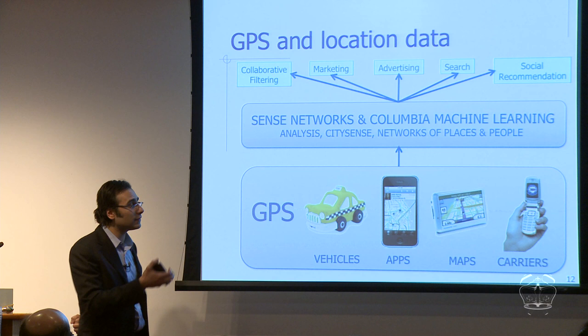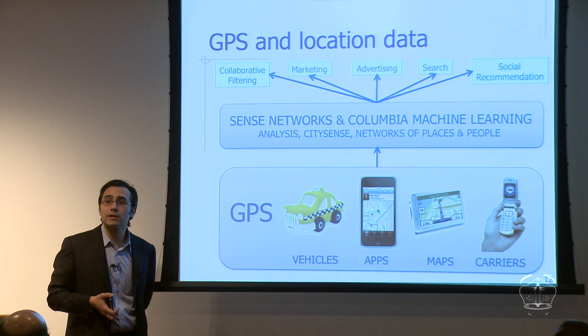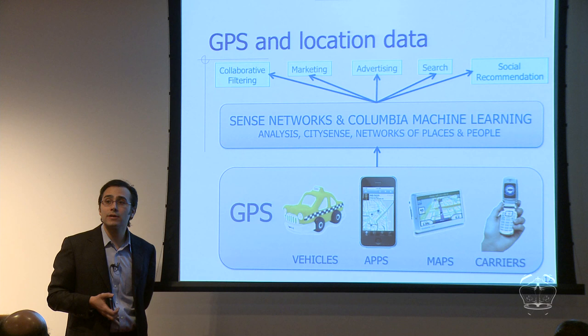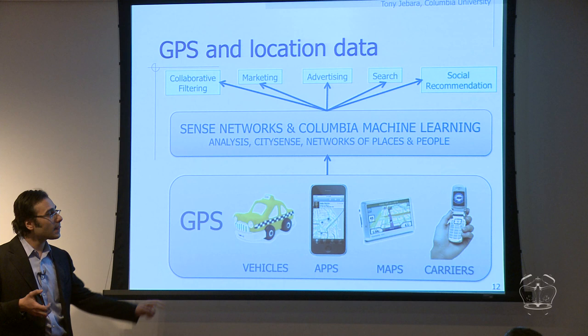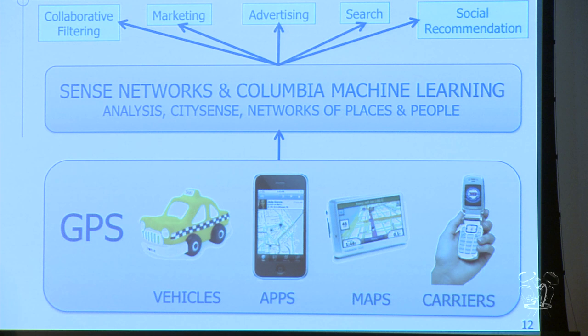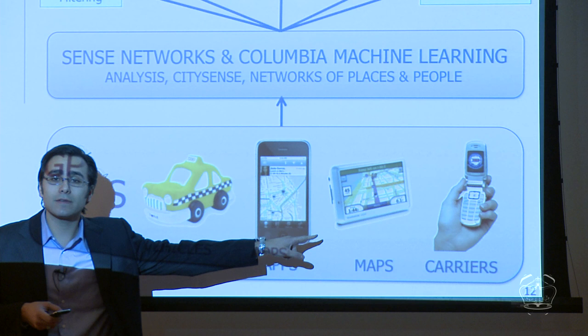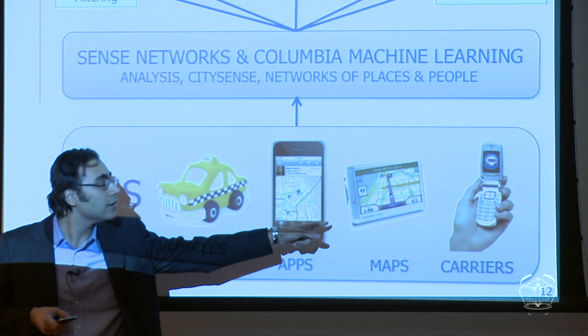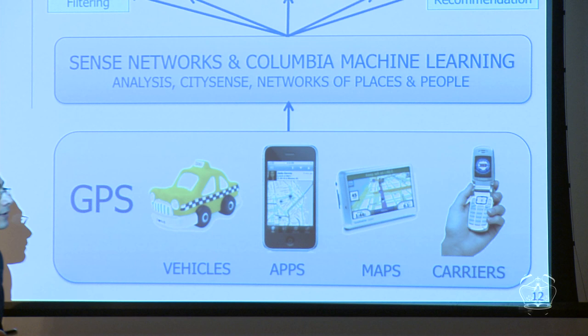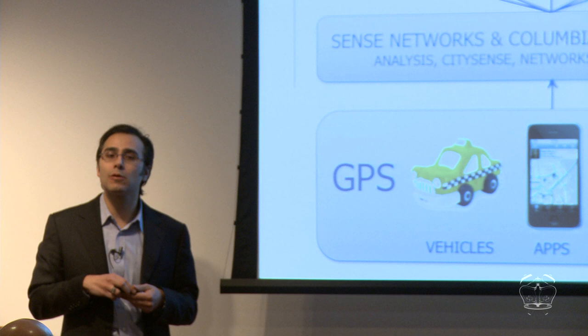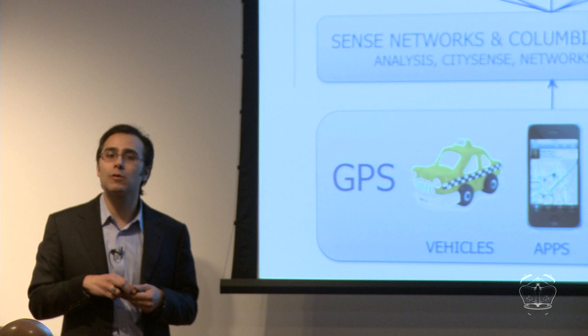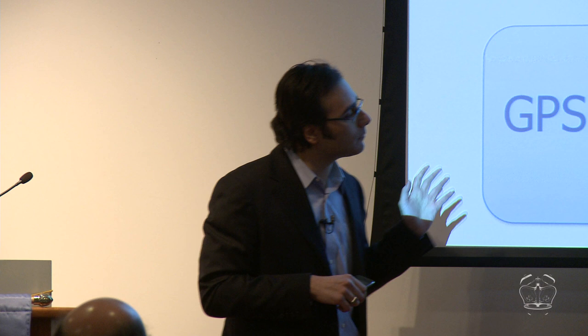GPS data is now being gathered by vehicles. All the taxis in New York — about 17,000 — report their location every 10 minutes or so to headquarters with a GPS ping. If you use applications to find interesting restaurants or find your friends on an iPhone, you're generating location data, and we know from this data where you are and at what time. If you use a traffic device, data is being collected. When you drive around, your information is used to figure out how slow traffic is right now. And of course, if you have a cell phone, whenever you make a call or send a text, the phone company knows which cell towers you're using and roughly where you are.